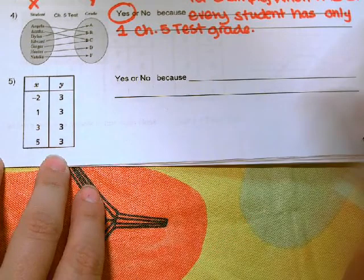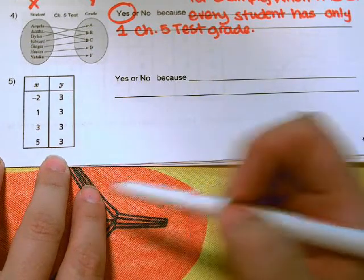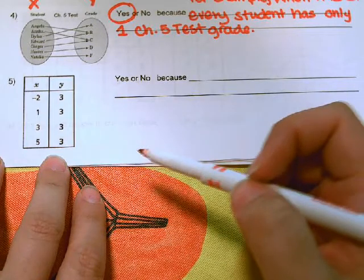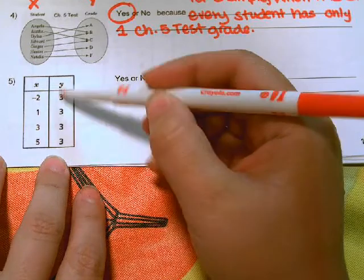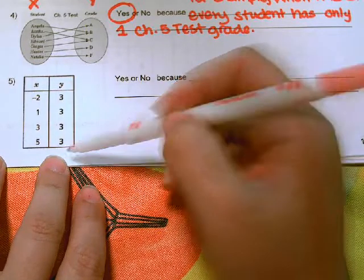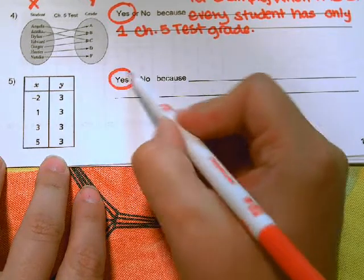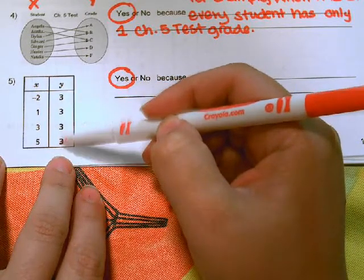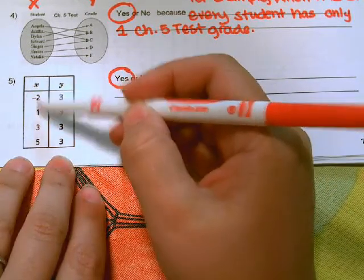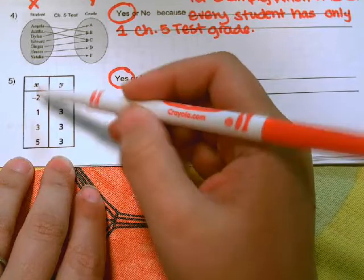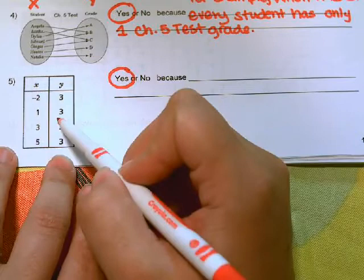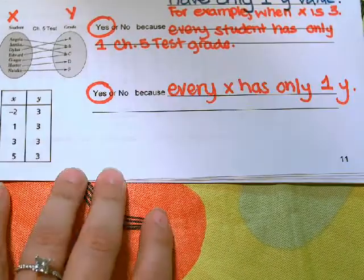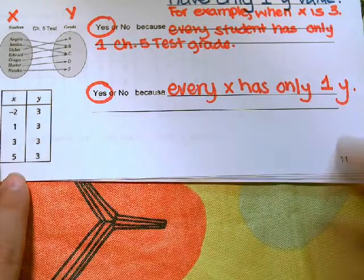Last one here, we're given a table. It wants to know whether it is a function. Does every X have only one Y? And the answer is yes. It's okay that they have the same number here, but each of these X's are different. So every X has only one Y. This would be a function.